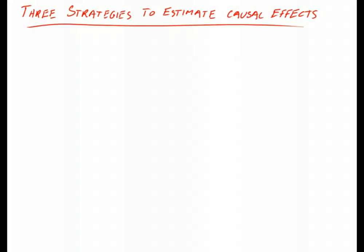I'm going to discuss three strategies to estimate causal effects, based on a book by Winship and Morgan called Counterfactuals and Causal Inference. The first method is what we usually do in economics, and this is conditioning.